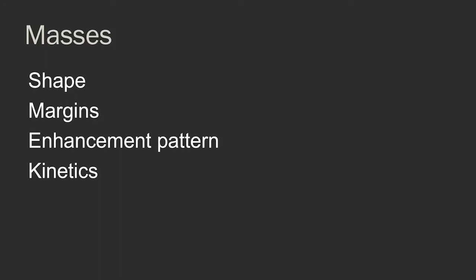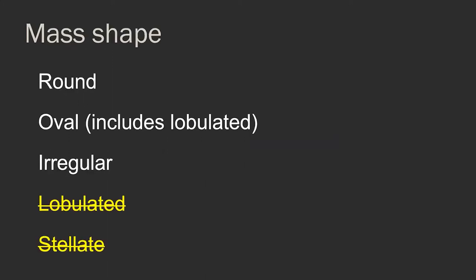For masses, we can describe more: their shape, margins, enhancement pattern, and kinetics. Mass shapes now come down to three: round, oval including lobulated, and irregular. Previously, lobulated had its own categorization and there was also stellate — those have been rolled into irregular.